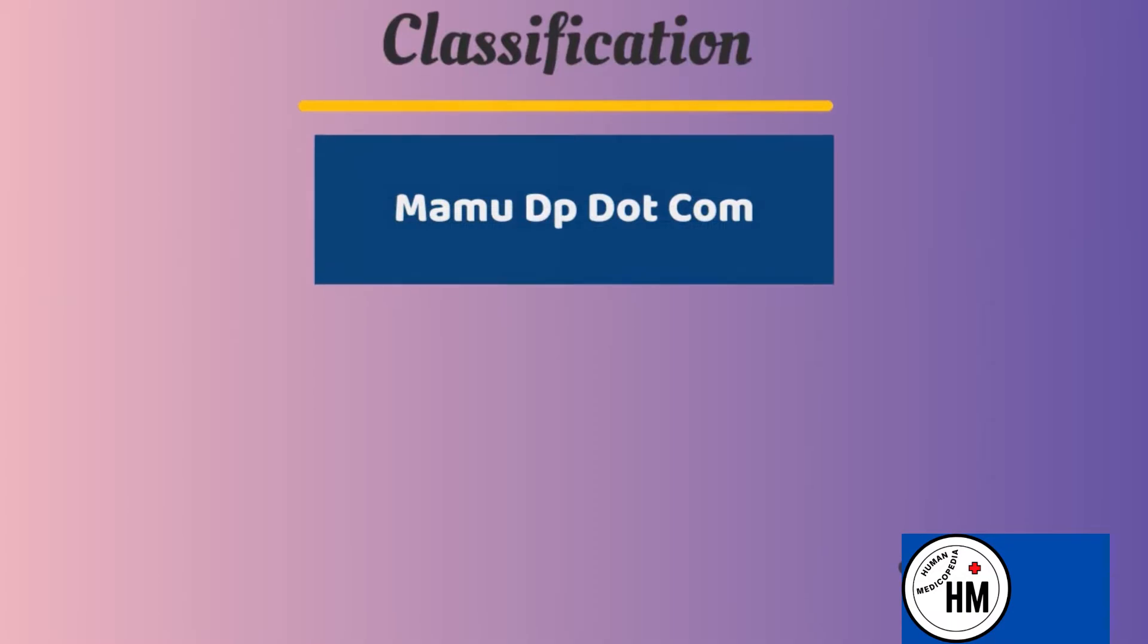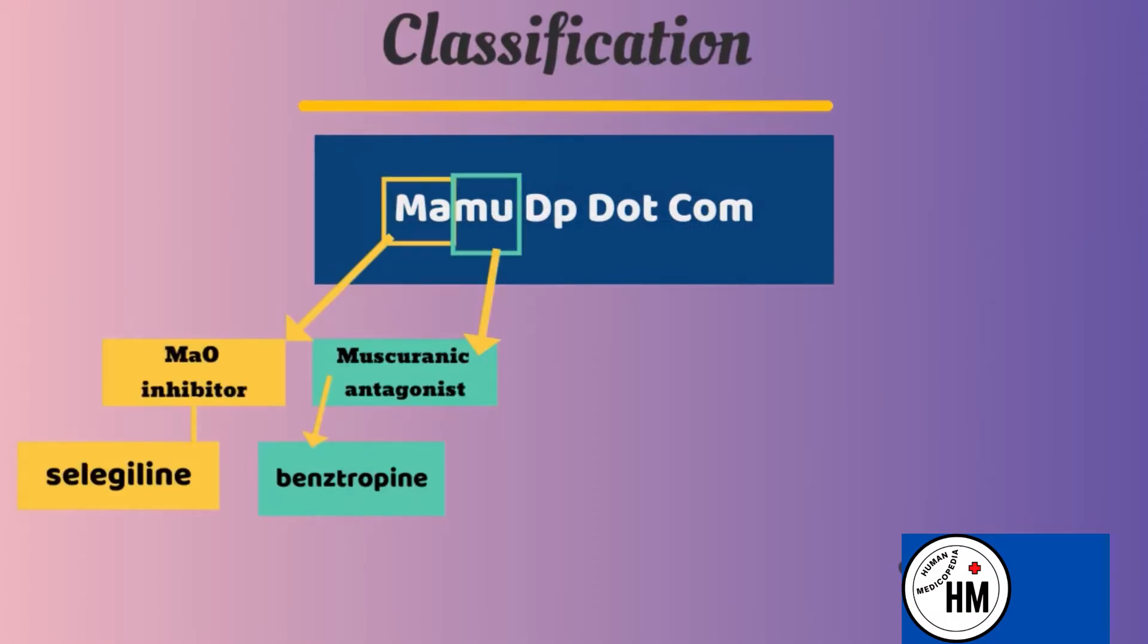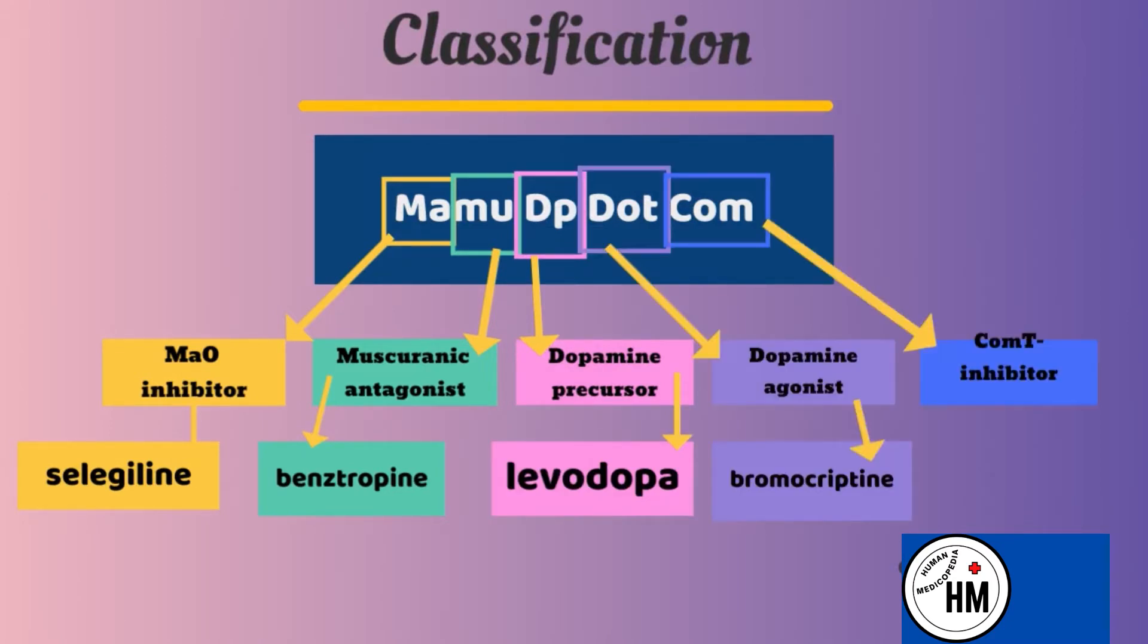Classification of the drugs used in this disease can be memorized by MAMUDP.COM. That stands for MAO inhibitor, muscarinic agonist, dopamine precursor, dopamine agonist, and COMT inhibitor.